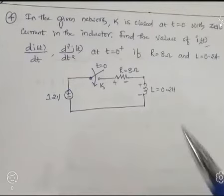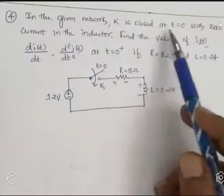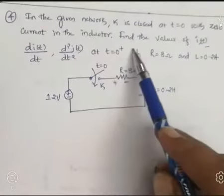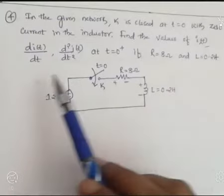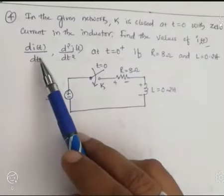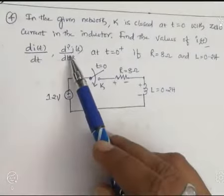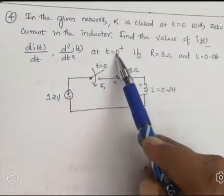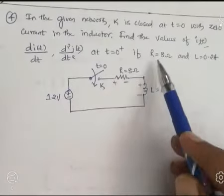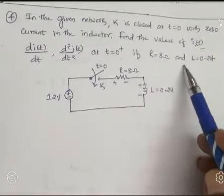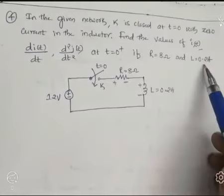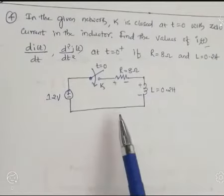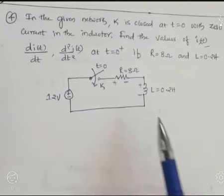In the given network, switch k is closed at t equal to 0 with 0 current in the inductor. Find the values of I(t), dI/dt, and d²I/dt² at t equal to 0 plus. The given values are resistance R equal to 8 ohms and inductor L equal to 0.2 henry. This is the given network for which we have to find these parameters.